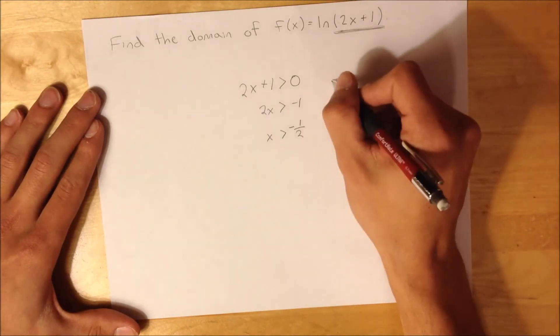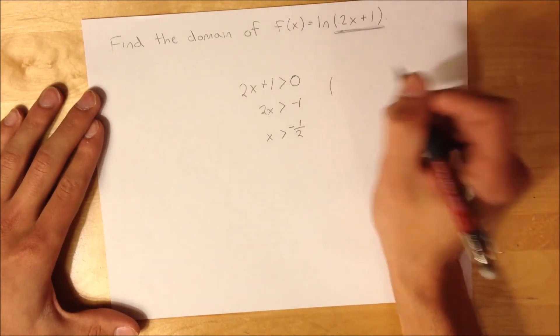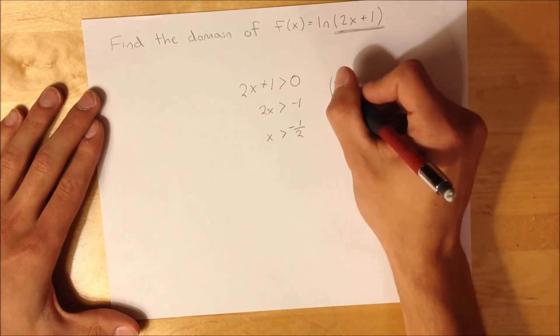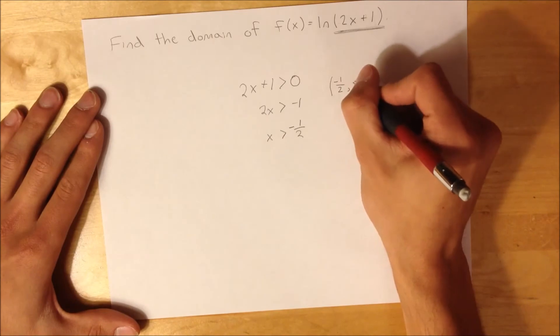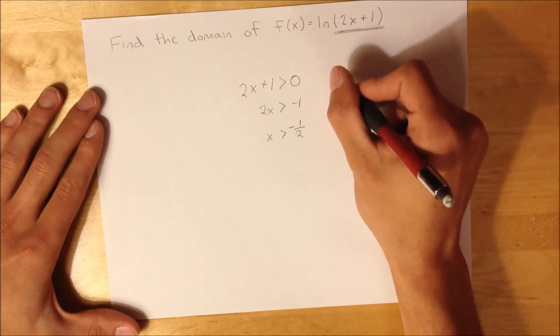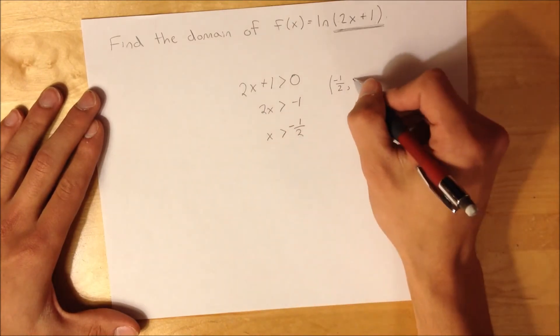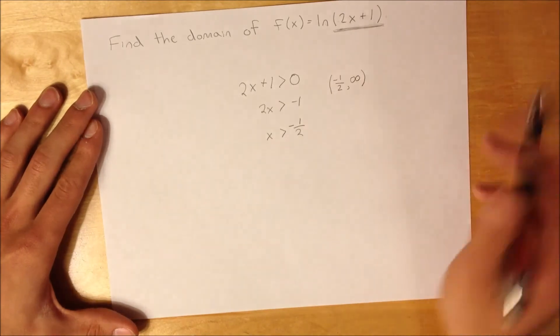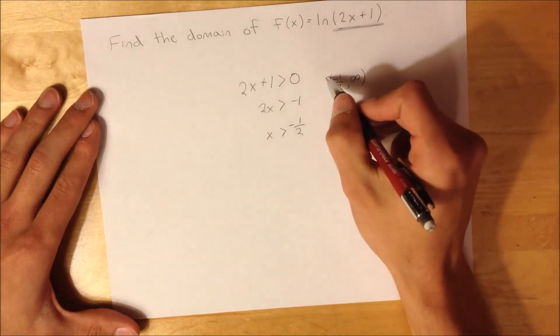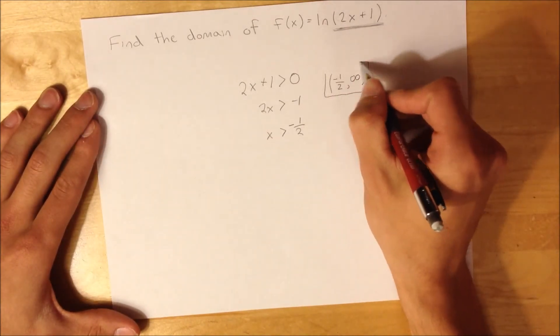And to write that, I'm going to write in interval notation, it's just going to be negative 1 half, comma, and it has to be an open parenthesis because it can't equal that, and then infinity, and another parenthesis. And that's it. That's your domain.